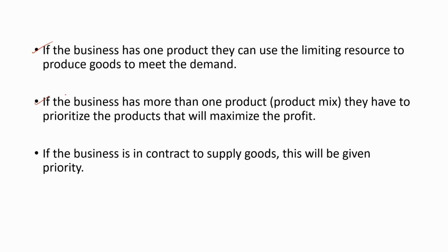The product mix instance is what we are going to discuss under this topic. If the business is under contract to supply goods, that contract will be given priority. For example, if a bakery has a contract to supply 100 cakes to a nearby cafe every week, no matter what the condition is, the bakery has to fulfill that supply. If the limiting resource is flour, they have to give priority to baking cakes for the cafe. After fulfilling this contract, they can give priority to other products.